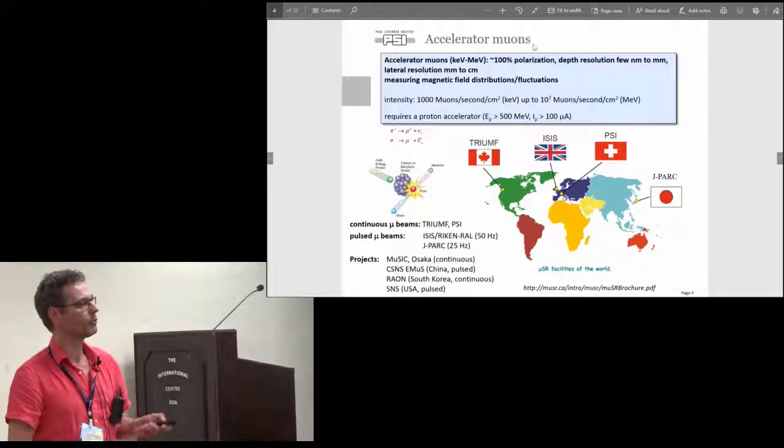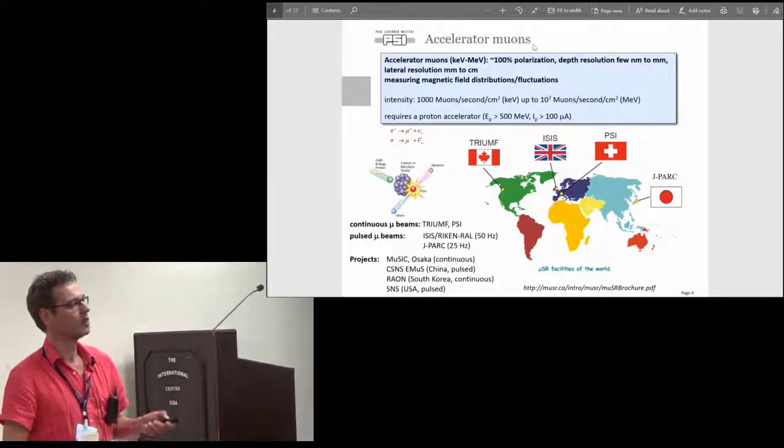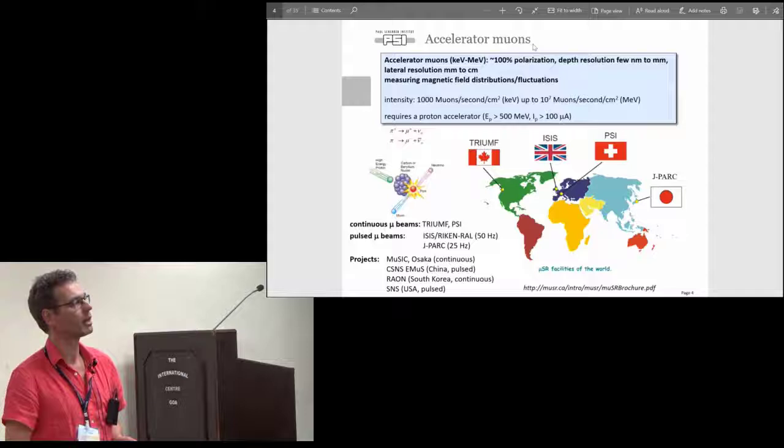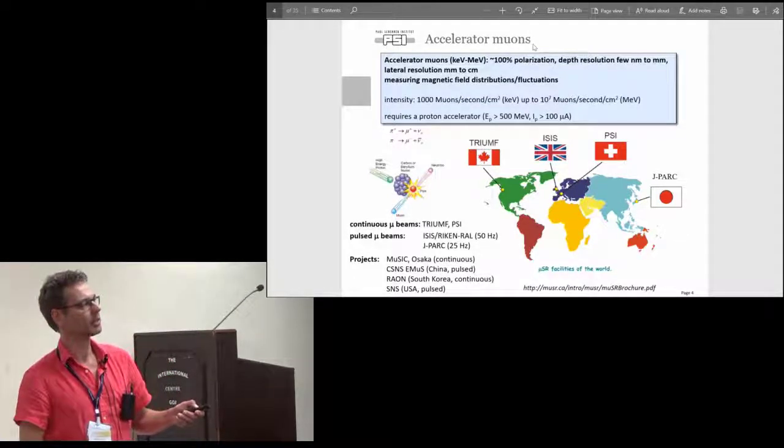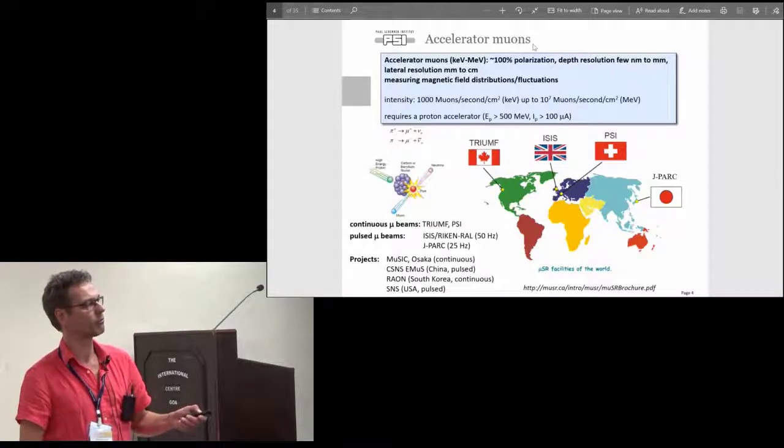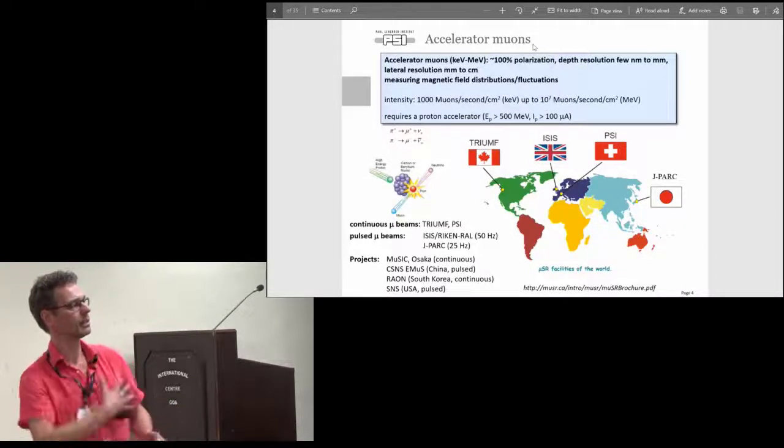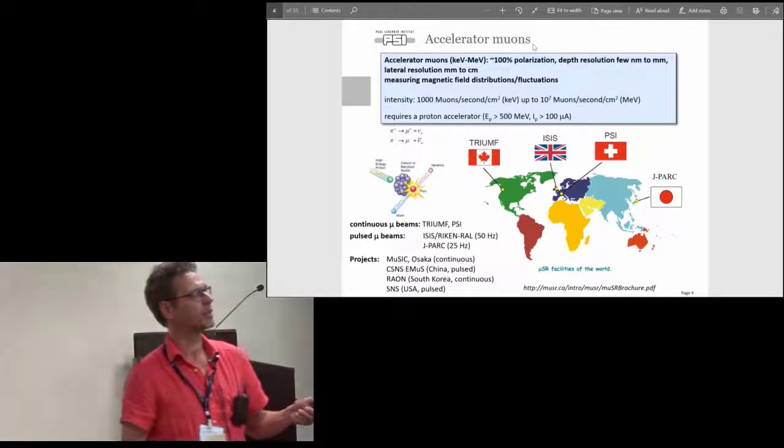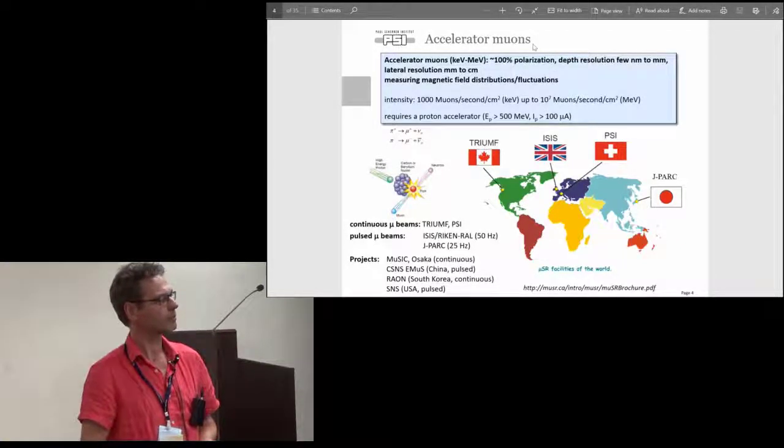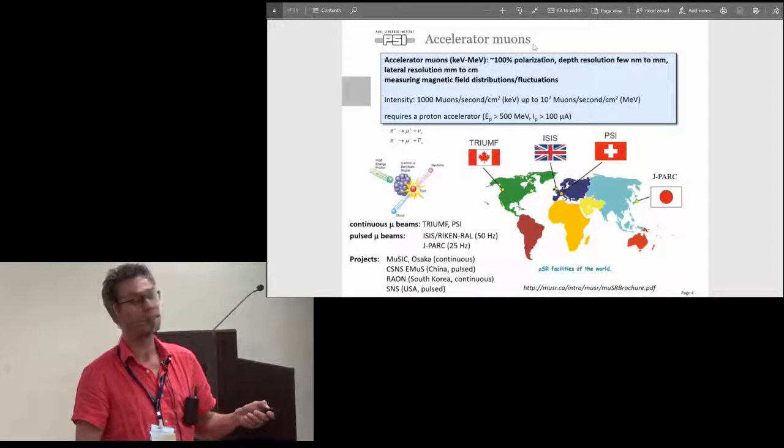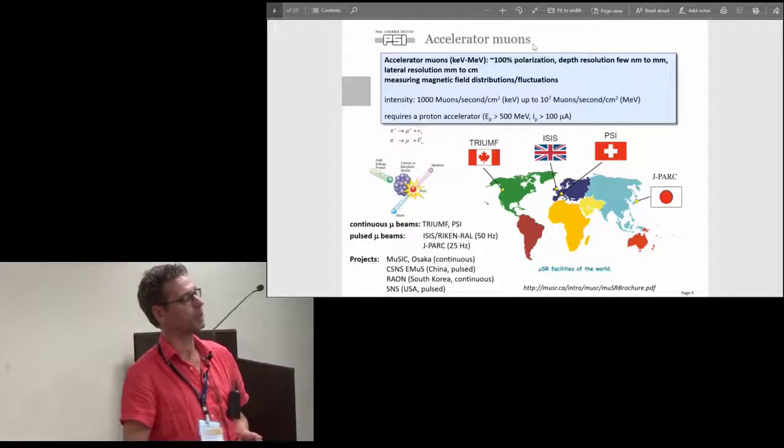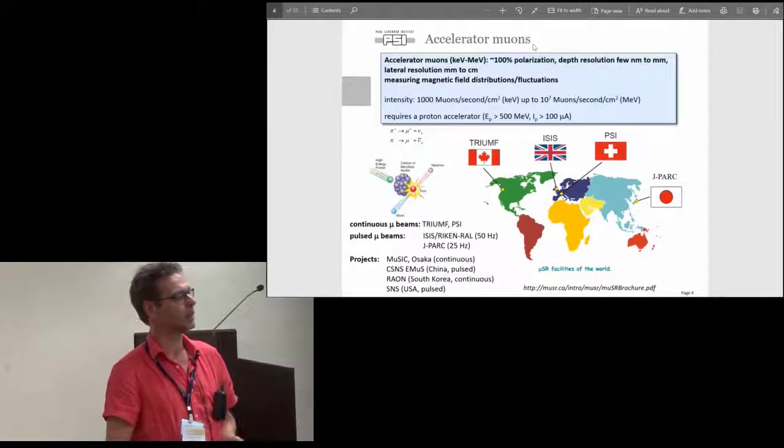We have four big facilities in the world: two DC beam facilities, Triumph and PSI, and pulsed machines at ISIS and JPARC. We have energy ranges from the kiloelectron volt up to 100 MeV, 100 percent polarization with rates of thousands per second up to millions per second per square centimeter. The reason why there are only a few facilities is you need a strong proton accelerator which is quite expensive, not only the energy but also a relatively high current.